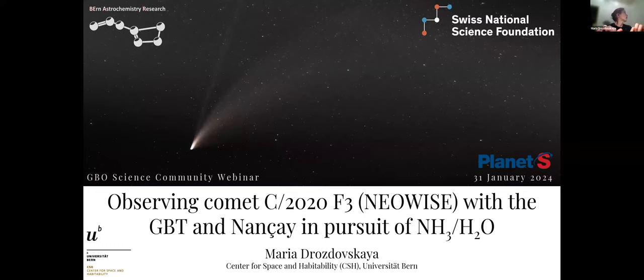All right. I hope slides are up. Excellent. So hello, everybody. My name is Maria Drozdovskaia, and it's my pleasure today to summarize our observational campaign that was executed on Comet C-2020-F3 NEOWISE with the Green Bank Telescope and the NANSÉ Observatory. The goal of this observational campaign was to constrain the NH3 over H2O ratio in this comet. And I think I'm the first cometary talk of this webinar series. So thank you very much for the invitation, and I hope I will be interested a lot more of you in cometary science after this.